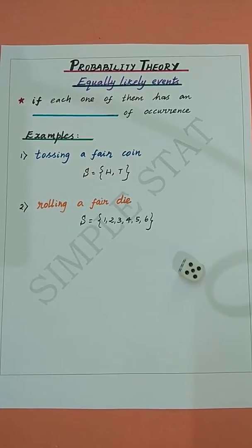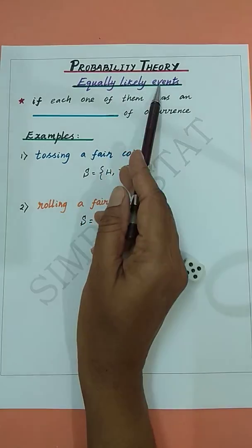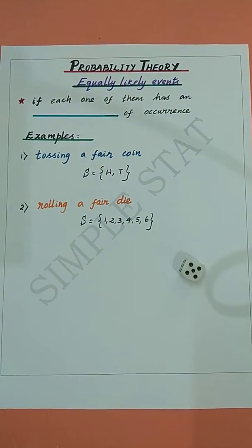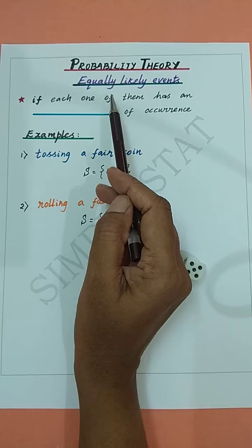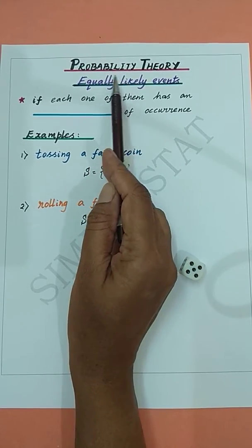We have already discussed the definition of mutually exclusive events and exhaustive events in previous videos. Let's now define equally likely events. We know that the term 'likely' means chance, therefore we can say that equally likely means equal chance.